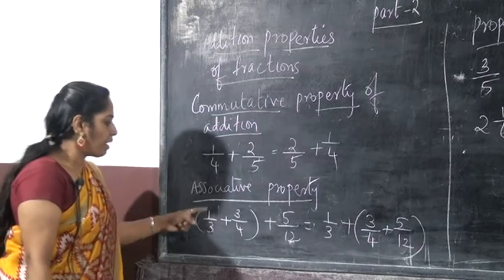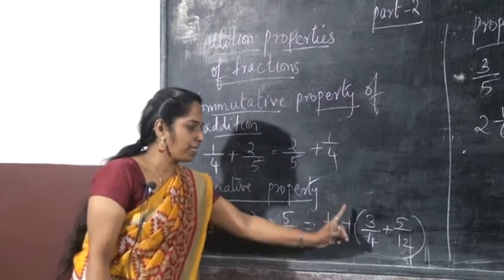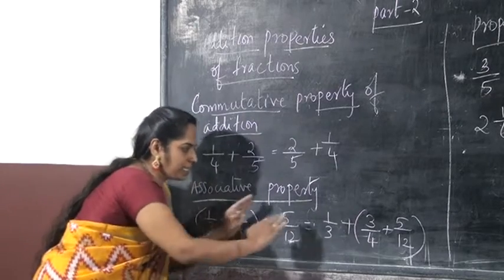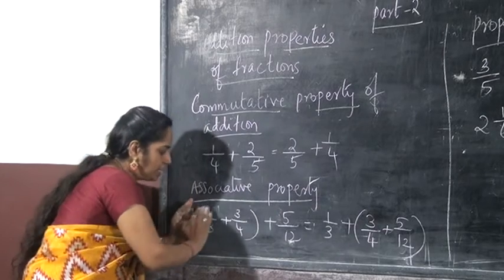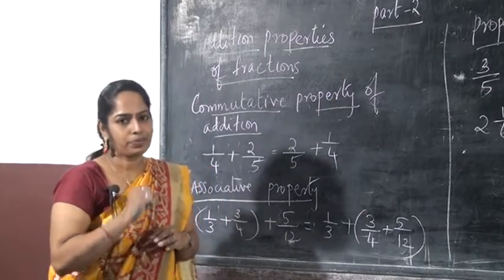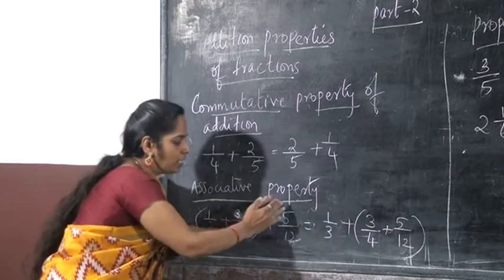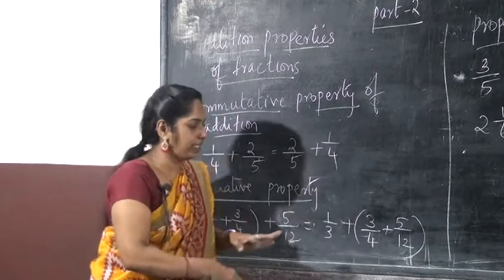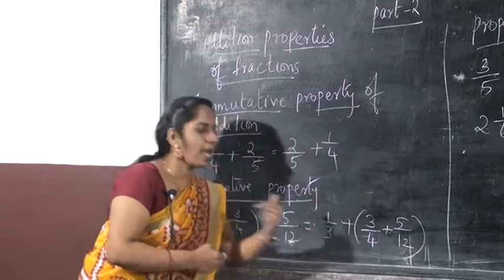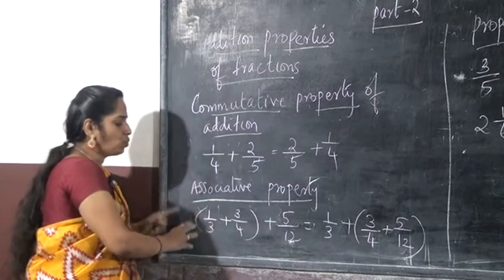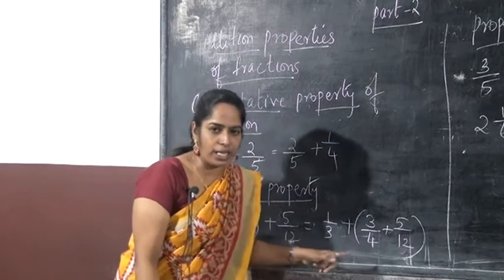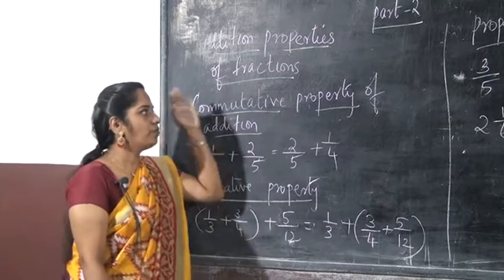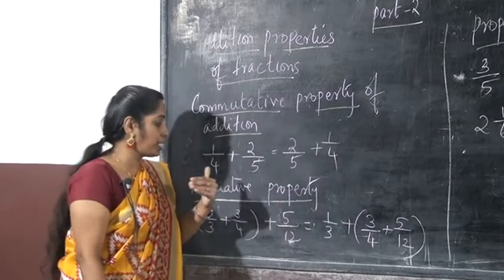Next is associative property. That is: 1/3 plus 3/4 plus 5/12 is equal to 1/3 plus 3/4 plus 5/12. When we are adding the first two fractions and then adding the third fraction, it is the same as adding the second and third fraction first and then adding to the first fraction. What is the associative property?